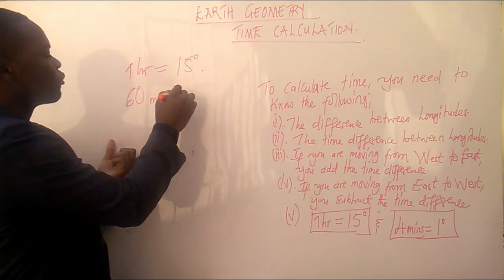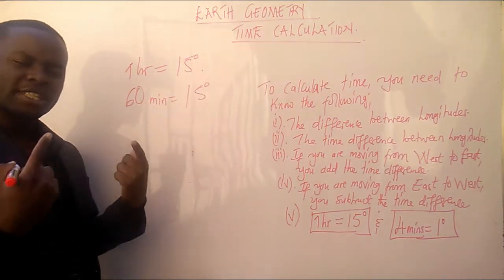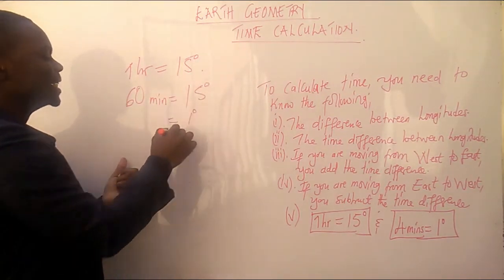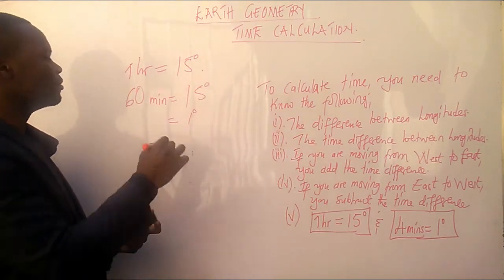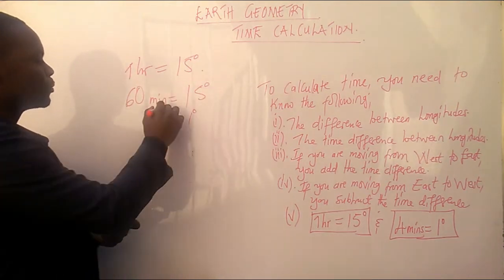So, in short, we have got 60 minutes to represent 15 degrees. Now, the question is, what about 1 degree? How many minutes are we going to have? So, let's put x here. We cross multiply.